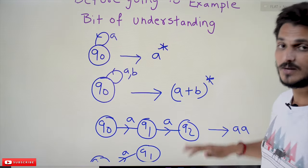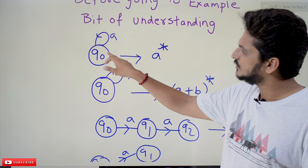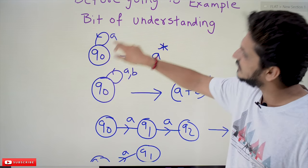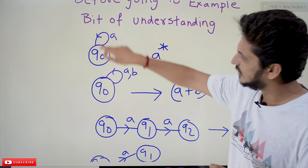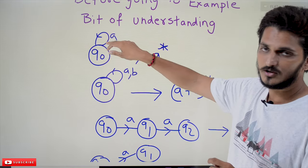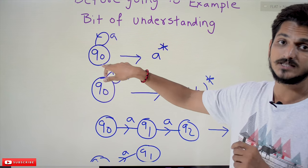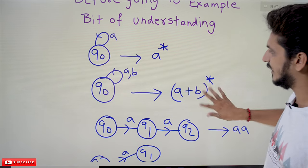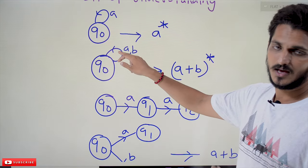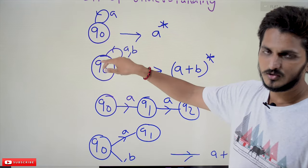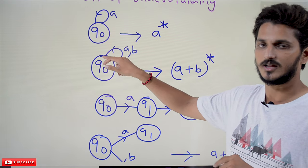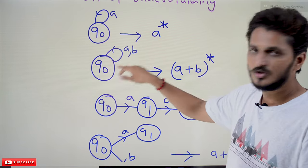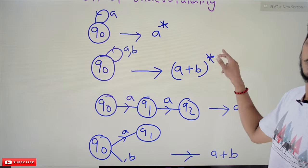If Q0 is both the initial and final state with a self-loop on A, then any number of A's are accepted, written as A*. Similarly, if Q0 has self-loops on both A and B, you can take them in any order — A, B, B, A — and stay on Q0. This can be written as (A|B)*.